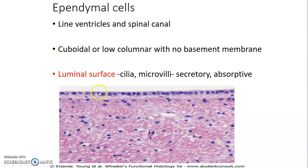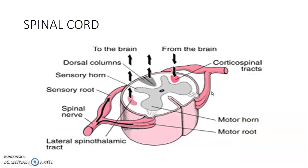In cross-section, the spinal cord has an outer portion of white matter and an inner portion of gray matter. The gray matter has a dorsal (sensory) horn posteriorly and a larger ventral (motor) horn anteriorly, with a central canal. The white matter has a ventral median fissure anteriorly and a dorsal median sulcus posteriorly. Motor (ventral) roots and sensory (dorsal) roots join to form a spinal nerve.